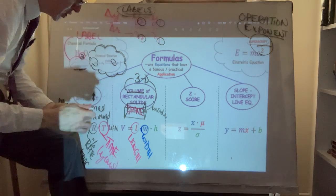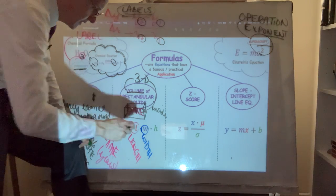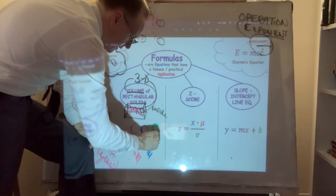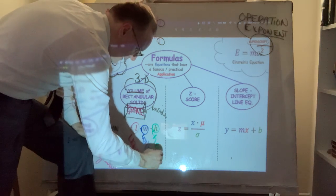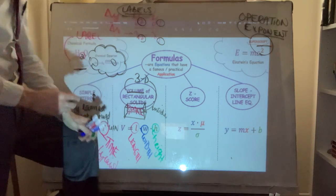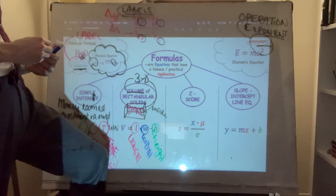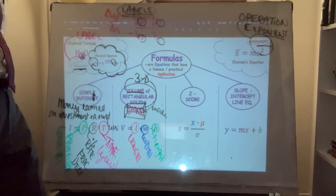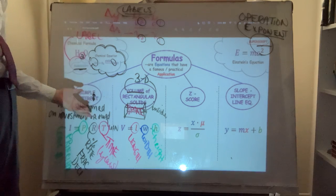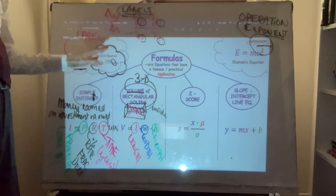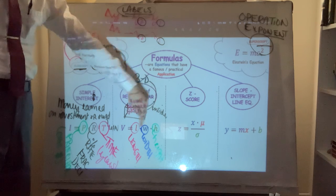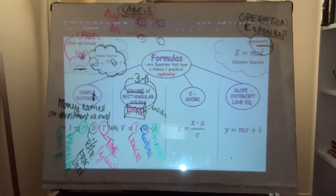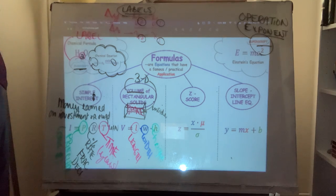The individual factors in V = L × W × H are intuitively length, width, and height — though height can also be depth. These have different purposes with different labels, as opposed to principal, rate, and time in the simple interest formula.